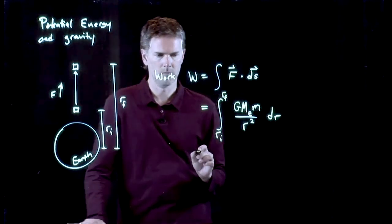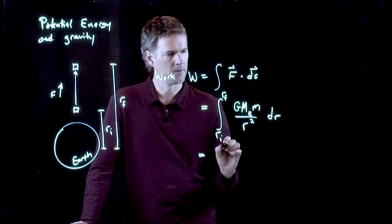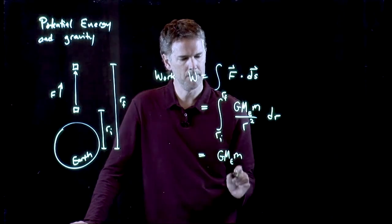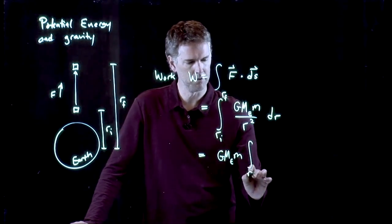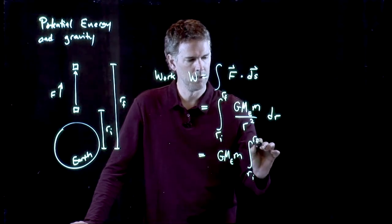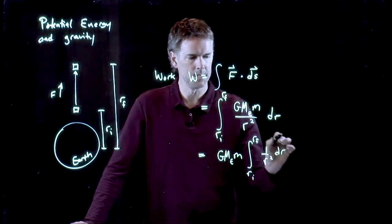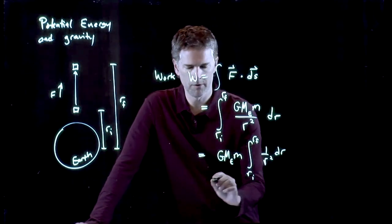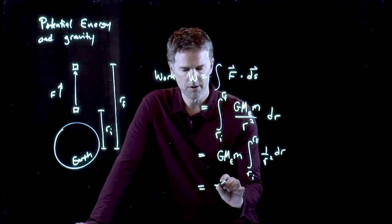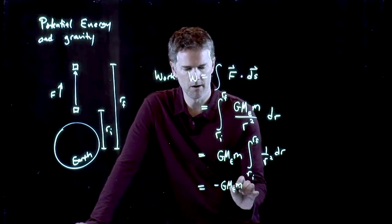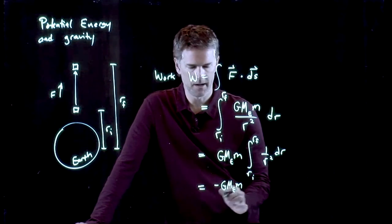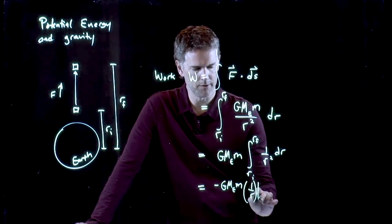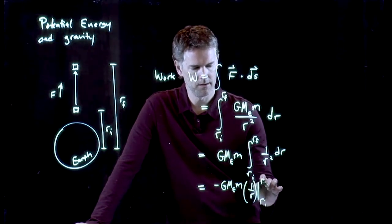All right. We can probably do that. Let's see. We've got G, m_e, m. Those are all constants. We can put those in front of the integral. We have a 1 over r squared dr. And we know how to do that. Integral of 1 over r squared is just negative 1 over r. So let's put the negative sign out in front. This becomes a 1 over r. And we are evaluating that 1 over r from r_i to r_f.